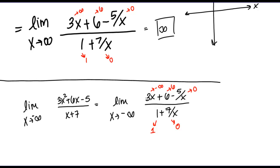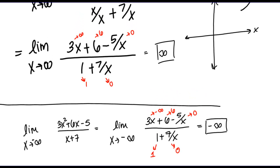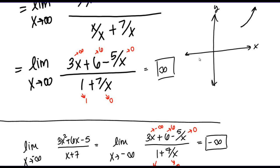So it looks like overall, my limit here is going to be negative infinity. This limit as x goes to negative infinity tells me about the end behavior on the left-hand side of my graph. I know that on the left-hand side, my values are going to get more and more negative as x goes to negative infinity.